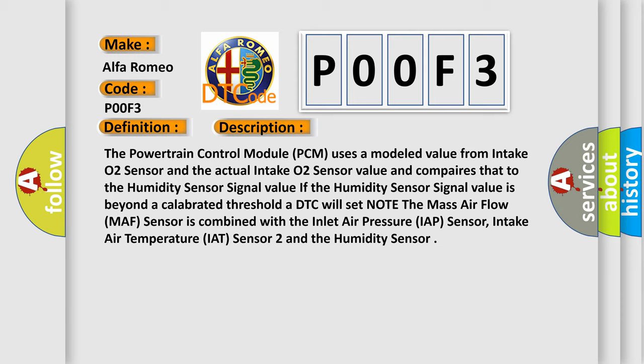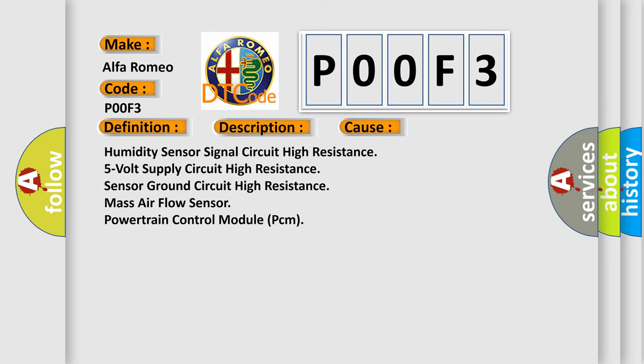Note the mass air flow MAF sensor is combined with the inlet air pressure IAP sensor, intake air temperature IAT sensor 2, and the humidity sensor. This diagnostic error occurs most often in these cases: Humidity sensor signal circuit high resistance, 5 volt supply circuit high resistance, sensor ground circuit high resistance, mass air flow sensor, or powertrain control module PCM.